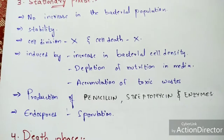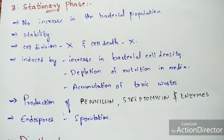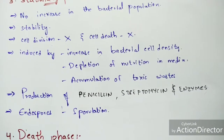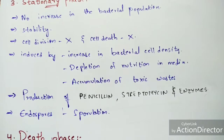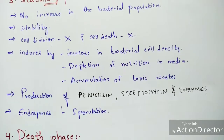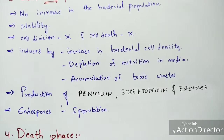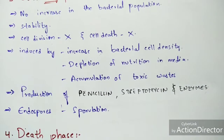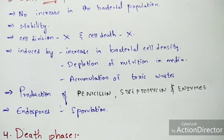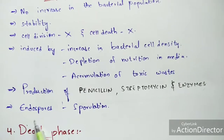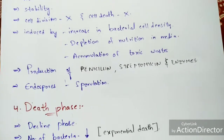One of the most important things to remember about the stationary phase is that bacterial cells produce antibiotics such as penicillin and streptomycin, as well as enzymes used by other bacteria. Additionally, some bacteria produce spores on their bodies in this phase, and the development of spores is known as sporulation. This sporulation phenomenon also takes place during the stationary phase.